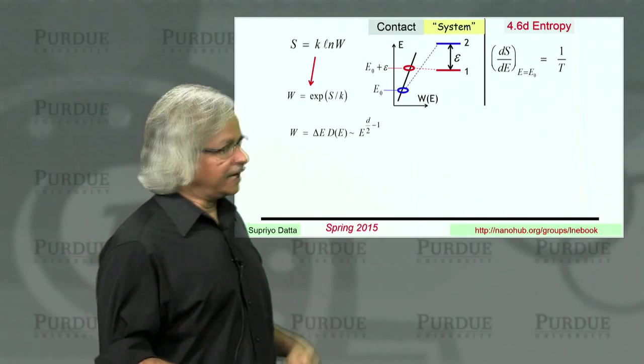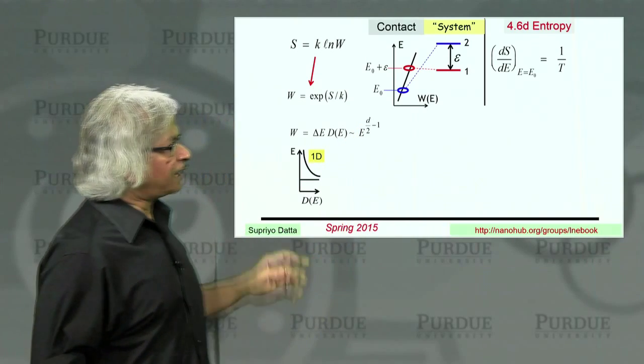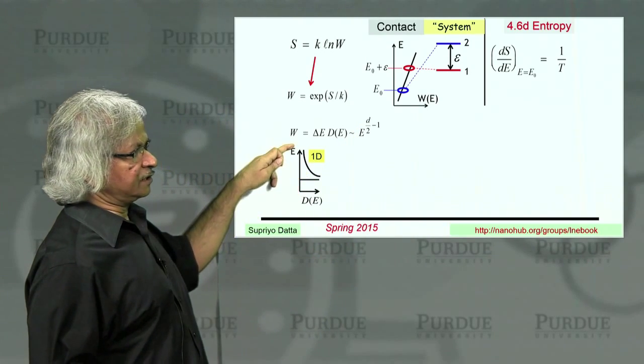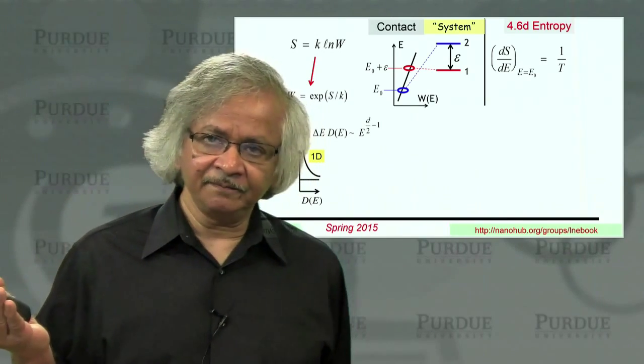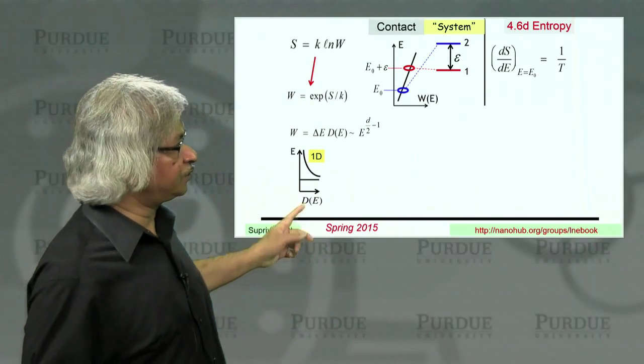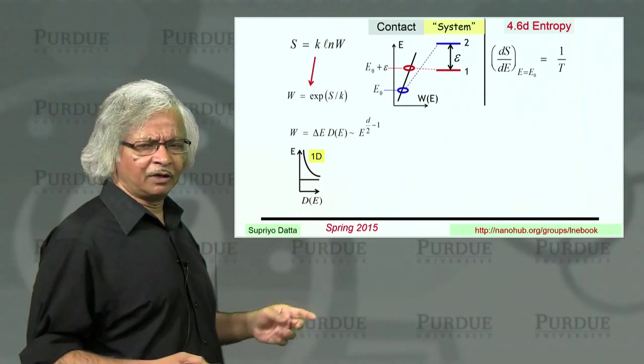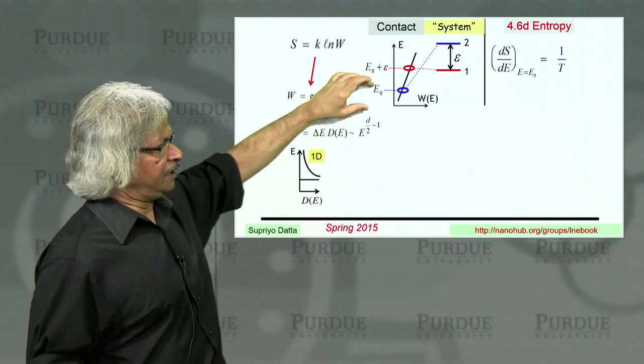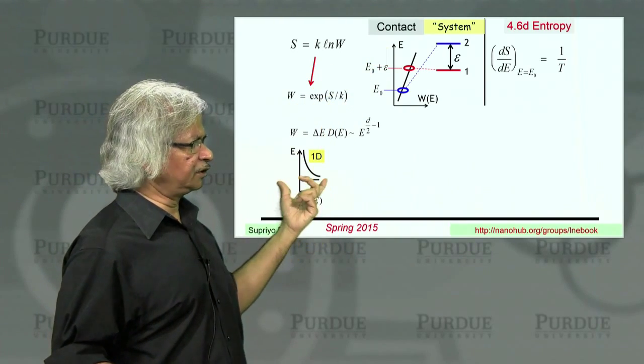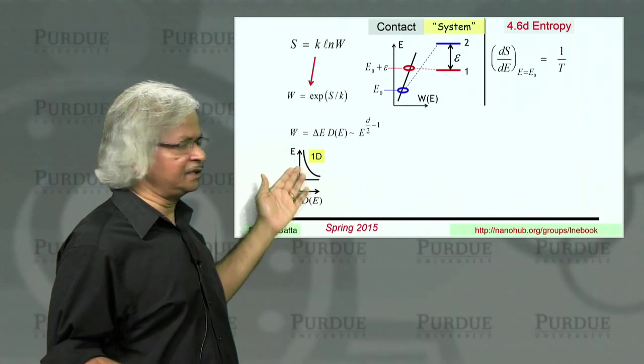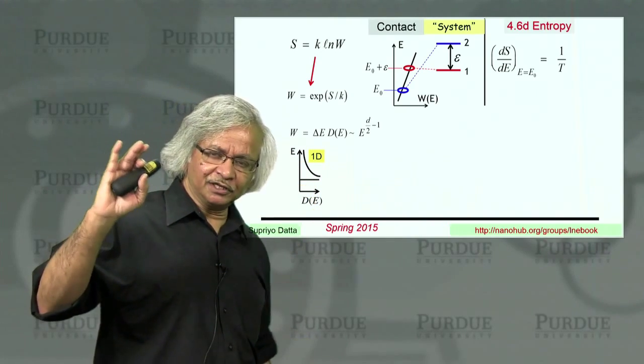And you could have a one-dimensional conductor or a two-dimensional conductor or a three-dimensional conductor. And we looked at how many states you have. Now if you plot that for one dimension, you would actually get a decreasing density of states. Actually for two dimensions, it was constant. For three dimensions, it's increasing. But for one dimension, it's actually decreasing. So you might wonder, how can I claim the density of states will always be an increasing function?